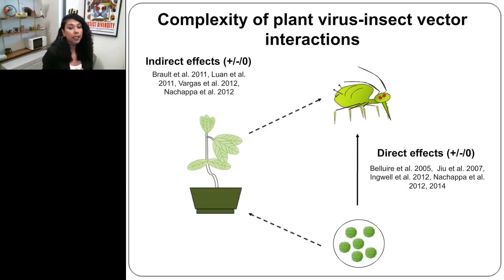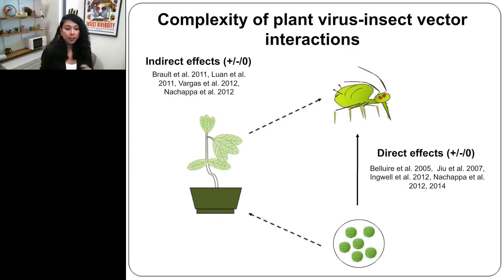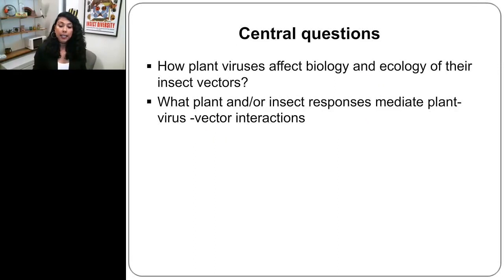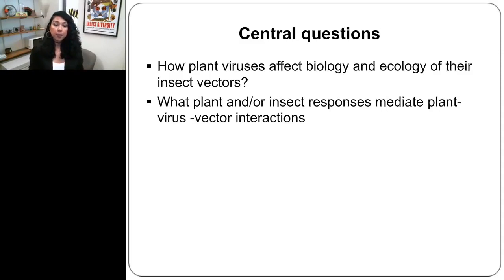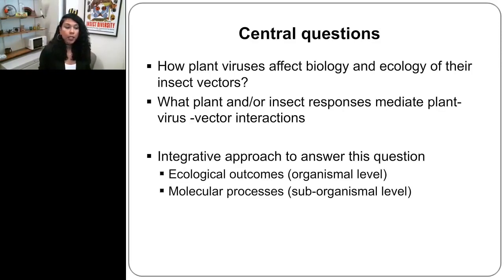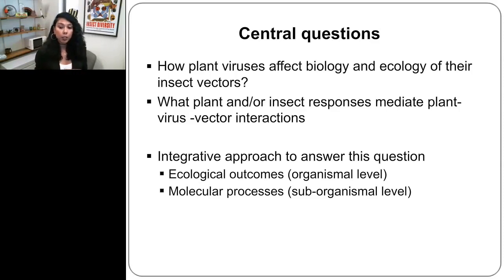This is a very complex interaction, and not one mechanism fits all the different insect vector systems. The central questions I study in my lab at Indiana University–Purdue University Fort Wayne are: how do plant viruses affect the biology and ecology of their insect vectors, and what plant- and insect-mediated mechanisms underlie this complex interaction? To do that, I use an integrative approach by looking at ecological outcomes at the organismal scale and molecular processes at the suborganismal level — using both plant assays, insect assays, and molecular tools.